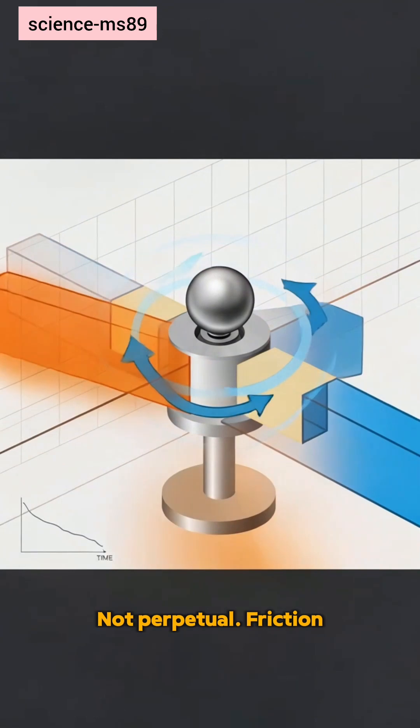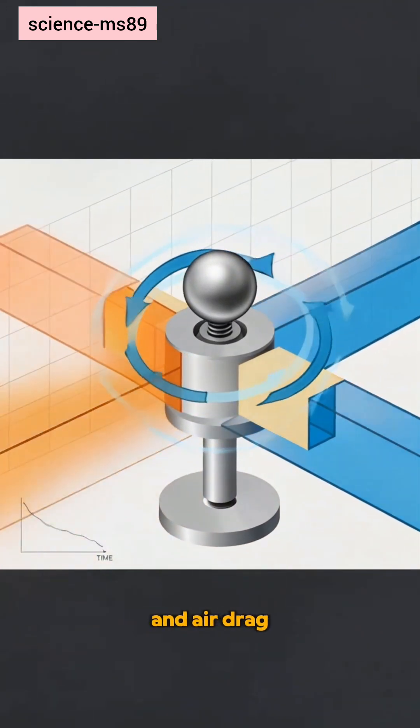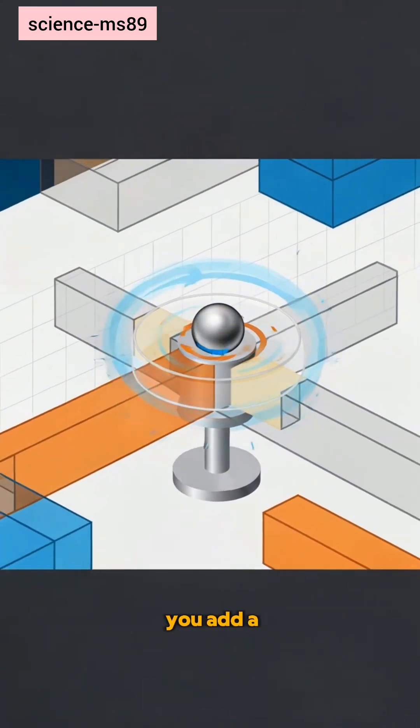Not perpetual. Friction in bearings, rolling resistance, and air drag bleed energy. It slows unless you add a nudge.